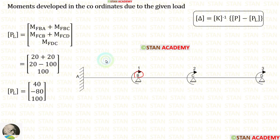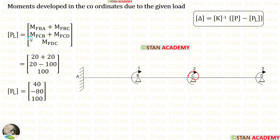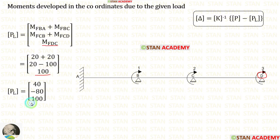The PL matrix contains the moments developed at the coordinates due to the given loads. At point B, we add fixed end moments M_BA and M_BC to get 40. At point C, we add M_CB and M_CD to get −80. At point D, there is one fixed end moment M_DC, which we apply directly. This gives us the complete PL matrix.